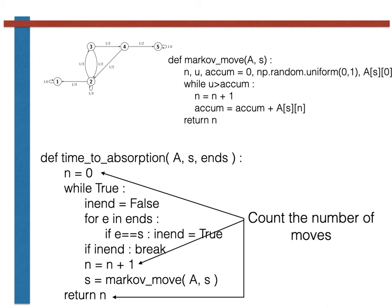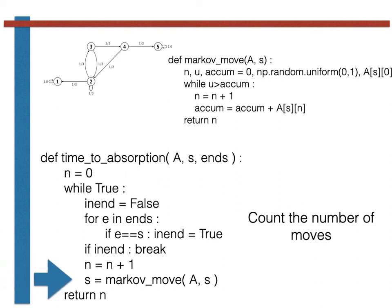Notice finally that we have the call to Markov move here to generate each of the states in our Markov chain. And that is all there is to it. You should now be able to complete the exercise and write your own code that is able to sample the number of steps there are on a Markov chain like this before the chain gets absorbed in one of the recurrent states. Thanks for your attention and good luck with the exercise.